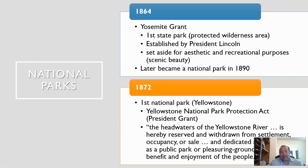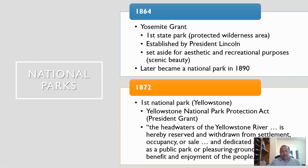As westward expansion was happening, people started to realize how important water was and how much of a limiting factor it is — it's the one thing human beings need to survive. With the basic ecological understanding that trees grow where water is, the idea was that if we want these waters to be pristine, the areas around them need to stay pristine too. That's how we get the idea of national parks.